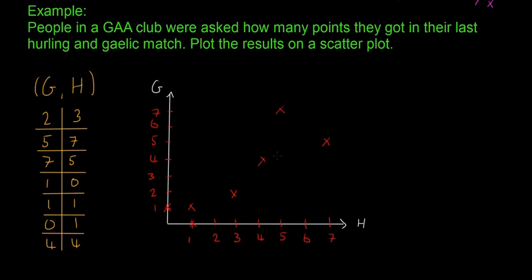The question is to plot the results in a scatter plot and ask is there a relationship? That's what scatter plots are about. Is there a relationship between the data? In this case we can see that yes there is, because as the person scores more in Gaelic they generally tend to score more in hurling as well. So you can say there is a relationship between those two paired data sets.